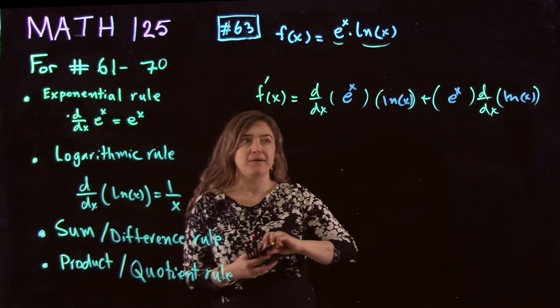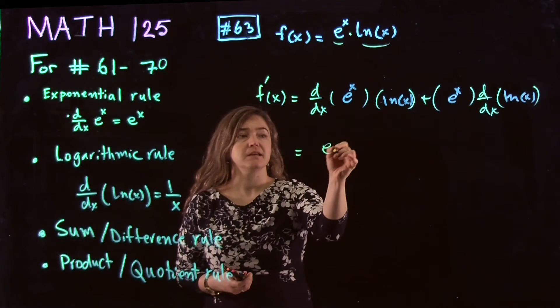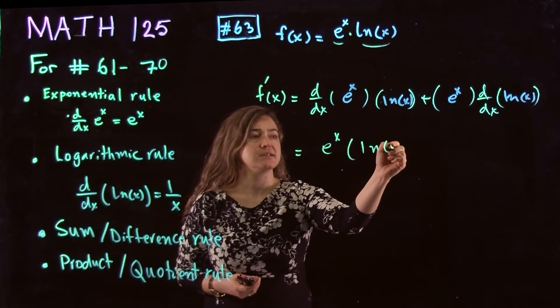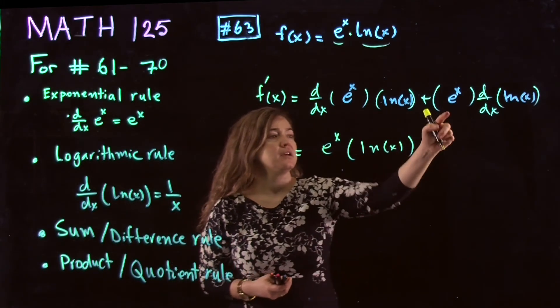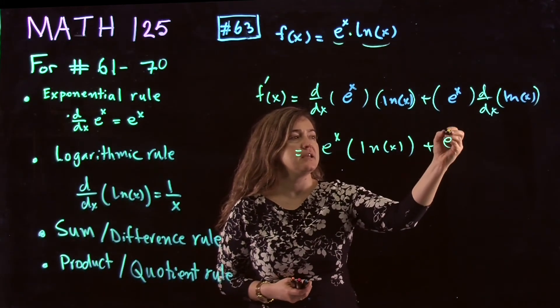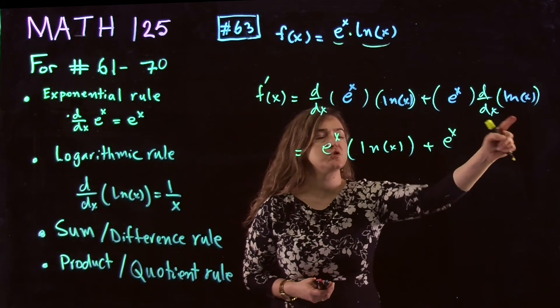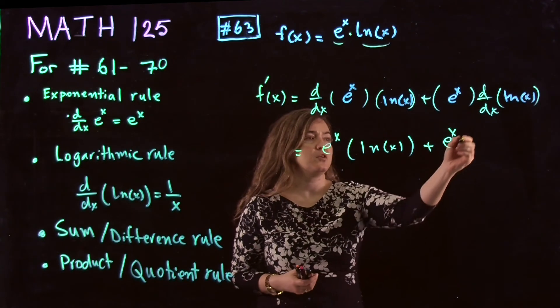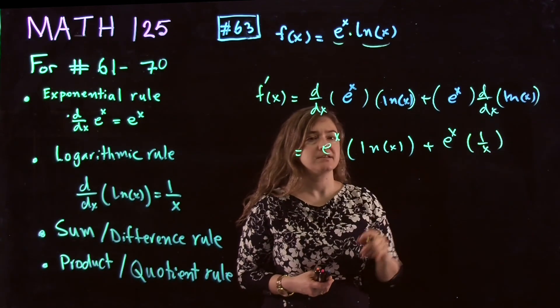Derivative of e to the power x is itself times the second one, then first one again times derivative of natural log of x, which is going to be 1 over x.